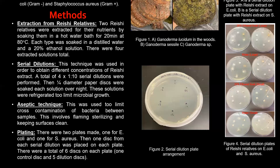A plating technique was then used. As seen on the left, each dilution was tested on a Staphylococcus plate and an E. coli plate, leaving 10 plates total — two plates per dilution. One disc from each dilution was placed on each plate. I had a control disc soaked in distilled water, then discs from the full concentrate at 10⁻¹, 10⁻², 10⁻³, and 10⁻⁴ dilutions. The plates were labeled and incubated for 24 hours at 37 degrees Celsius.